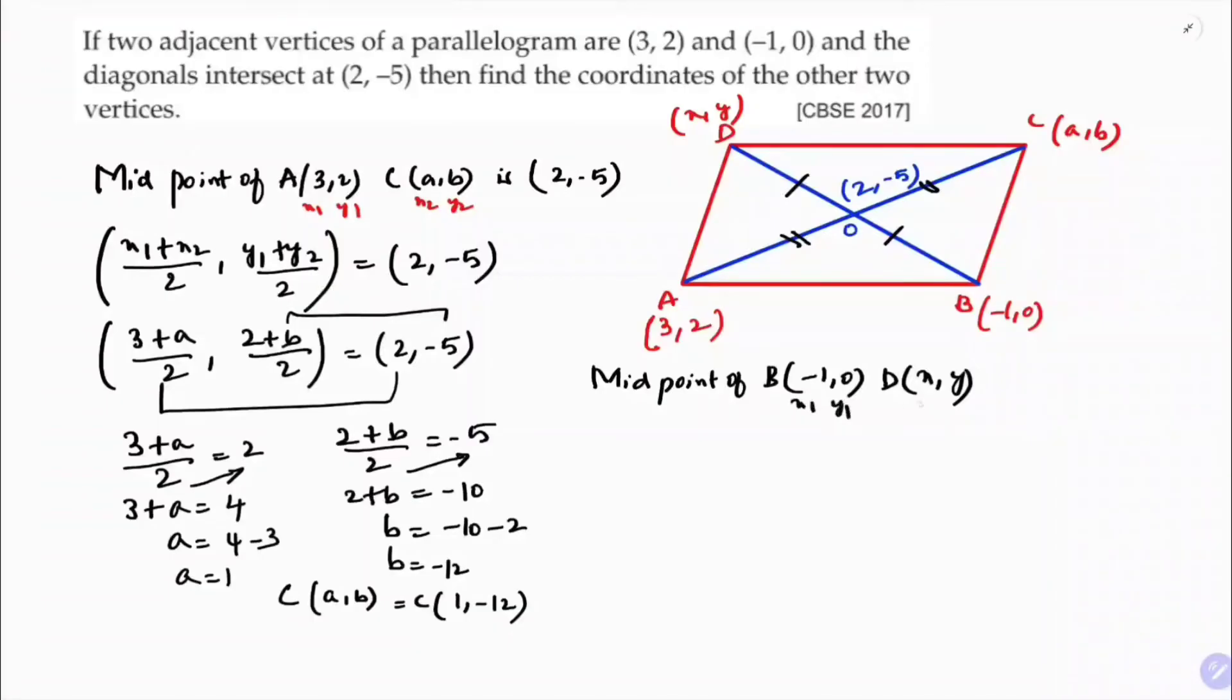So here this is x₁,y₁,x₂,y₂. Midpoint of B and D is also (2,-5). (x₁+x₂)/2, (y₁+y₂)/2 equals (2,-5).